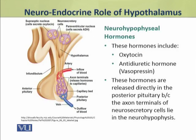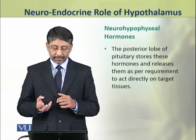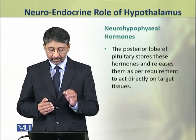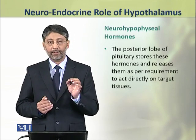Now we shall discuss the neurohypophysial hormones of hypothalamus. These hormones include oxytocin and anti-diuretic hormone, that is also known as vasopressin. These hormones are synthesized by the hypothalamus and they are released directly in the posterior pituitary, because the axon terminals of neurosecretory cells of hypothalamus lie in the posterior lobe of the pituitary, that is called neurohypophysis. The posterior lobe of pituitary stores these hormones and releases them as per requirement to act directly on their target tissues.